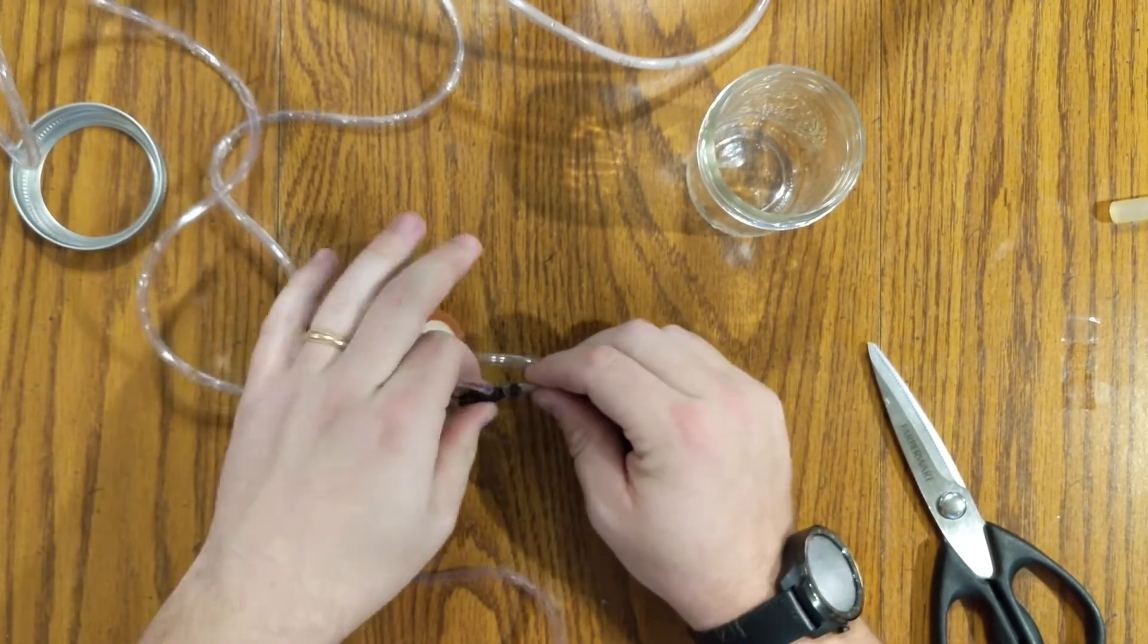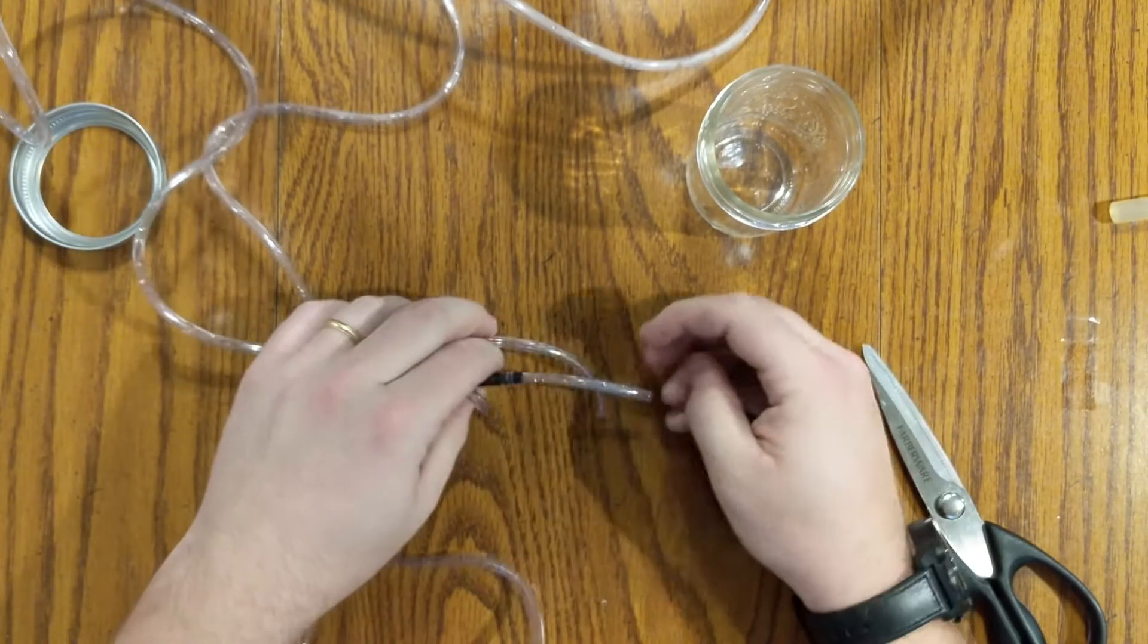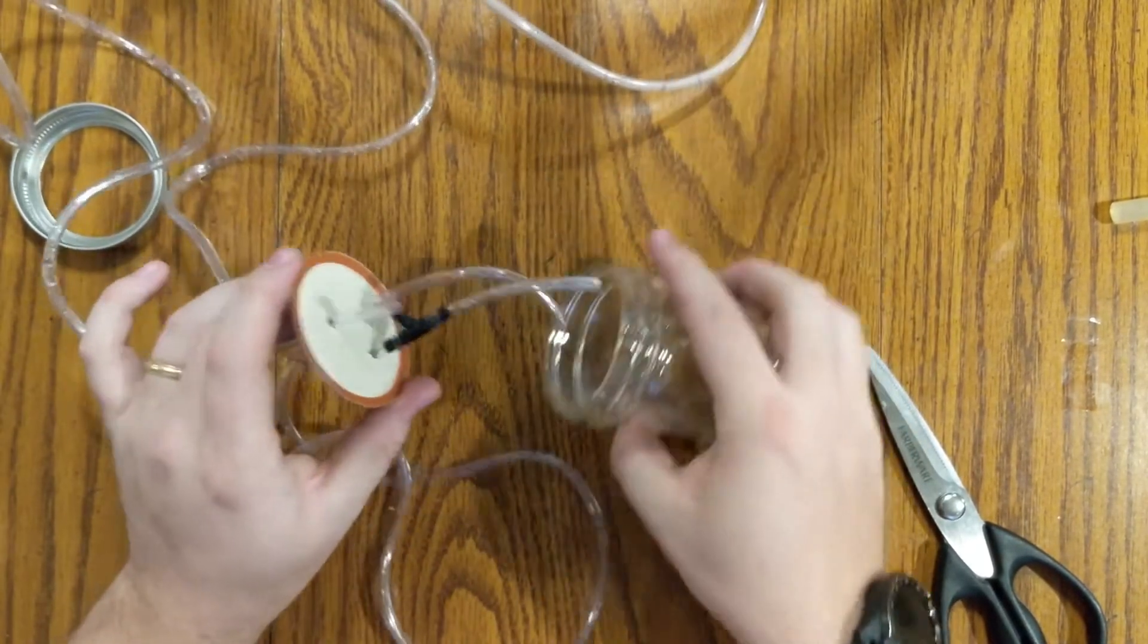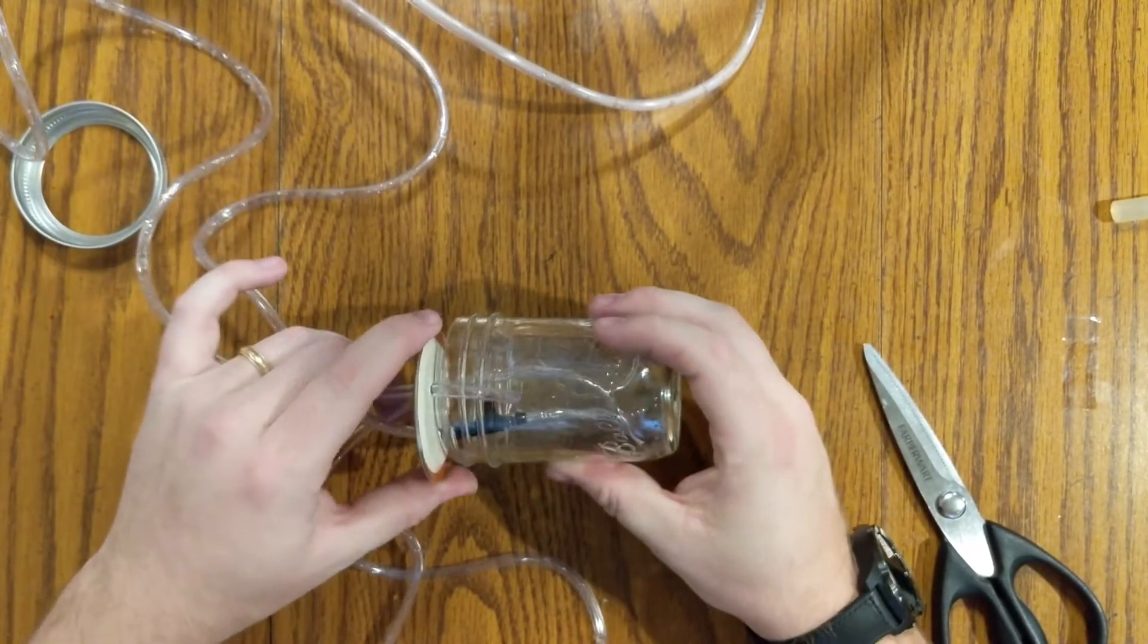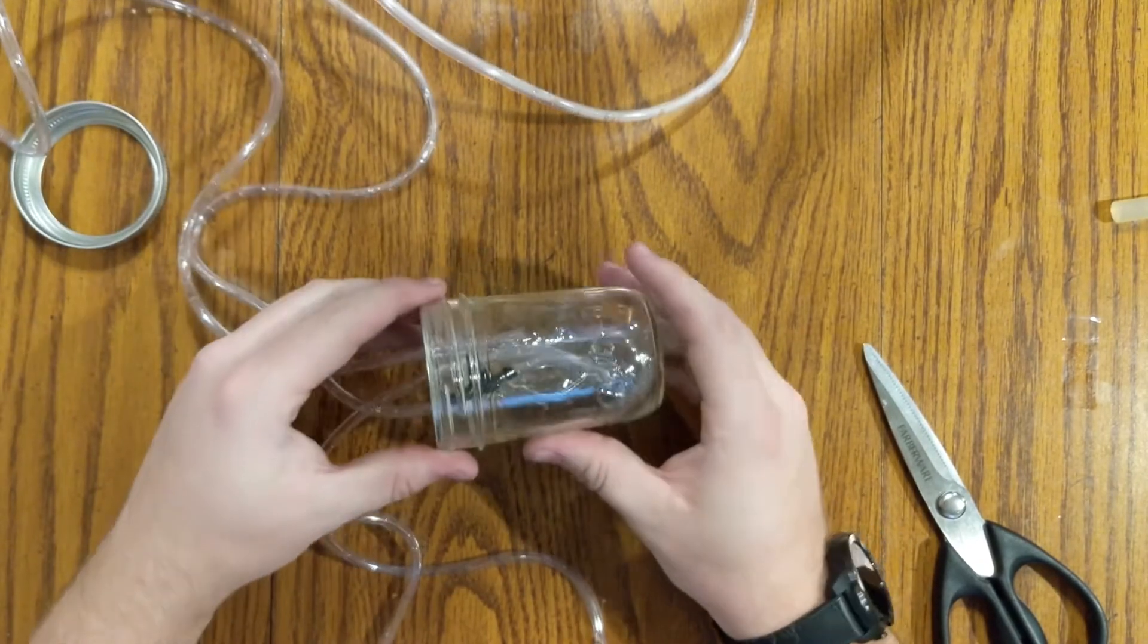So our T needs to be as close to the top as we can get it. And then go ahead and use the piece that you cut off and stick it to the bottom.